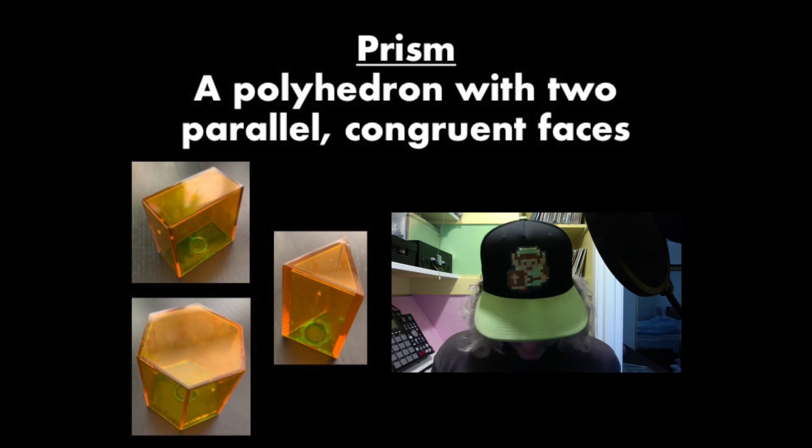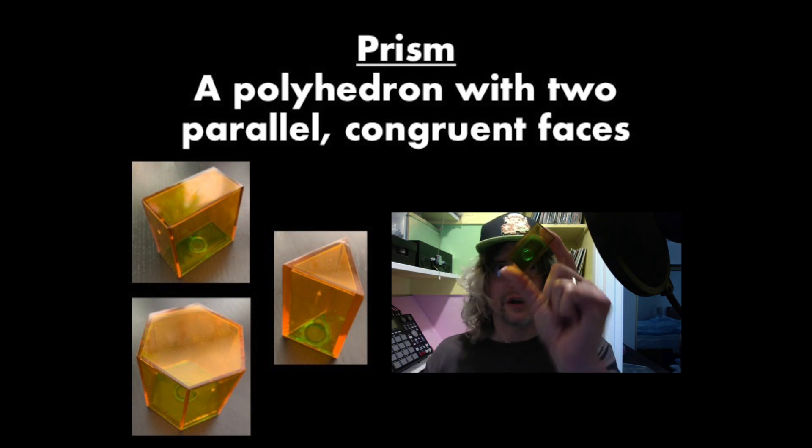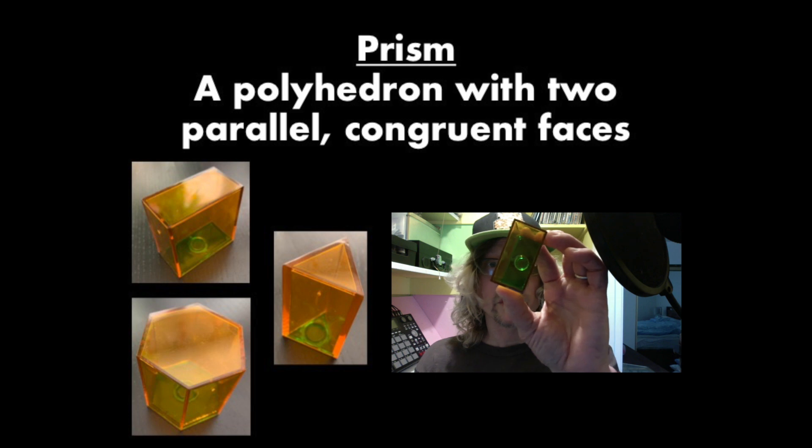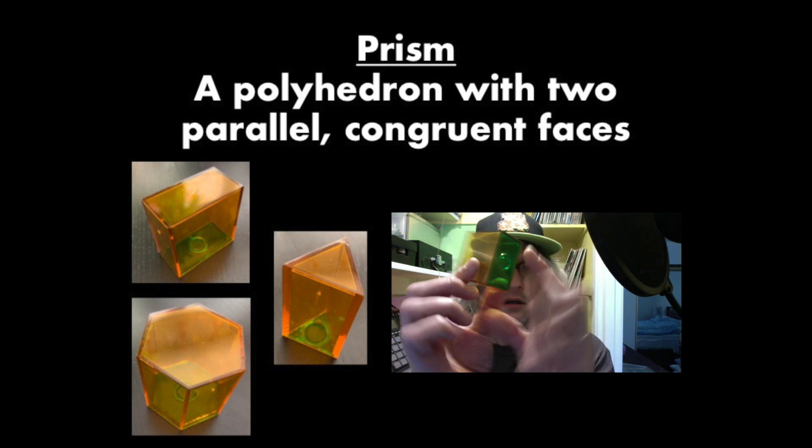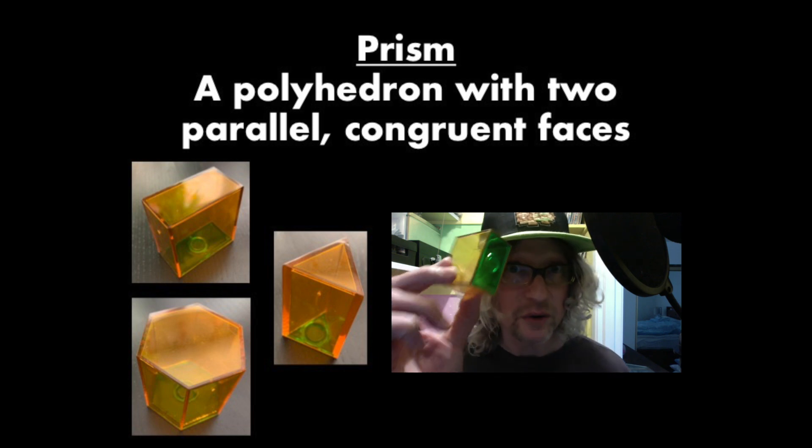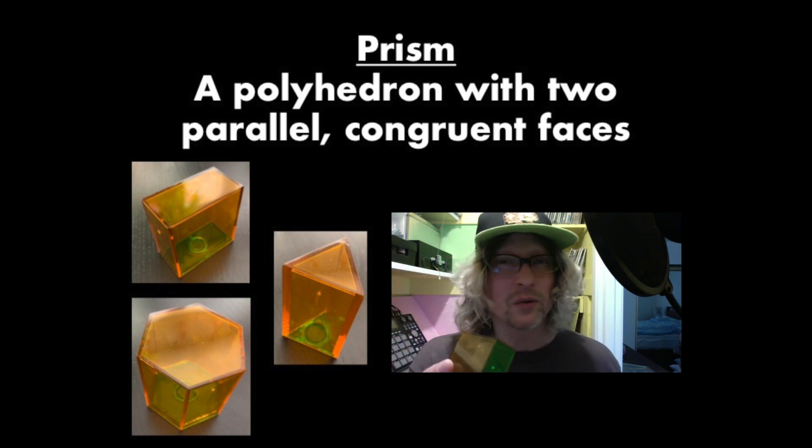Then we have a kind of boring one after the other two, but what would you call this? Think about it for a moment. I have a rectangle here, a rectangle here. Those two rectangles are parallel and congruent. That makes this a prism. It's a rectangular prism.